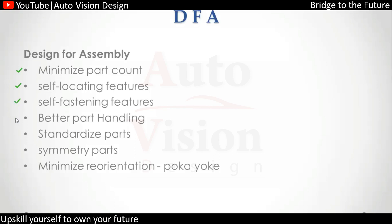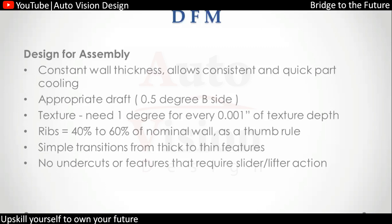Better part handling is also a key element — if there are many parts, we can reduce them to single standardized parts, so no need to maintain separate documentation. Whenever possible, use symmetry parts. Also, minimize the chance of a symmetry part being assembled wrongly — this is the poka-yoke concept used to ensure there is no incorrect reorientation. This is how Design for Assembly ensures proper assembly while reducing cost, process, and time.